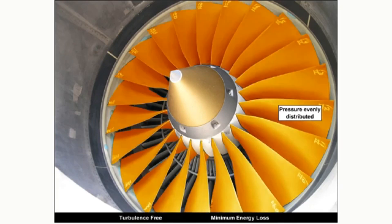To enable the compressor to operate satisfactorily, the air must reach the compressor at a uniform pressure which is distributed evenly across the whole face of the first stage. Thus the design of the intake duct is vital to the performance of the engine under all air speeds and angles of attack if compressor stall or surge is to be avoided.